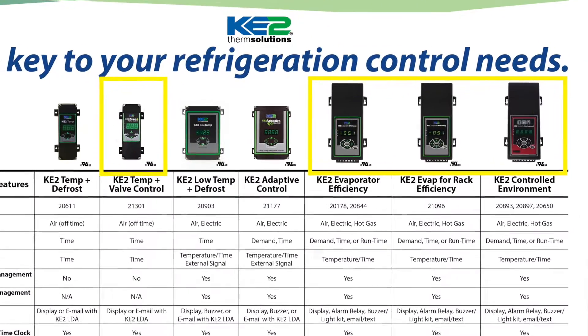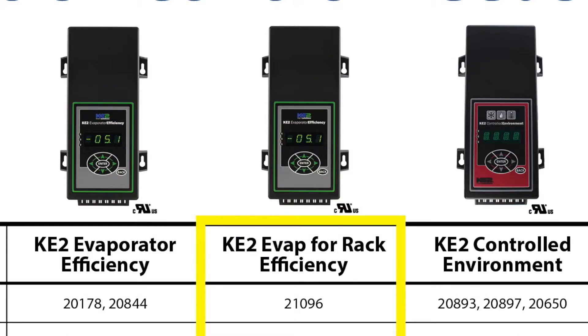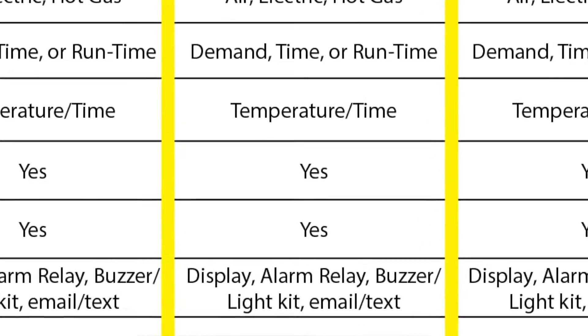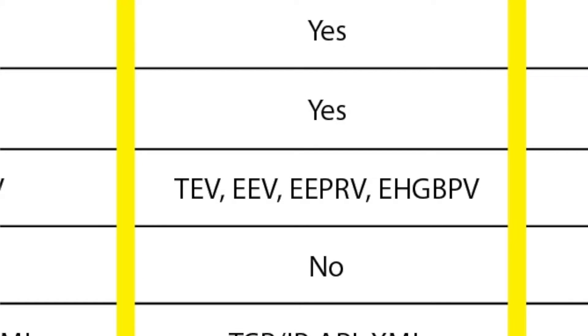Valve control varies from mechanical TEV for all of our controllers to controllers with the ability to control multiple electric valves. For example, the Key2Evap rack efficiency can control an EEV and an electronic pressure regulating valve or electronic hot gas bypass valve. Using the table to eliminate controllers based on these features will help you pinpoint the best controller fit for your application.